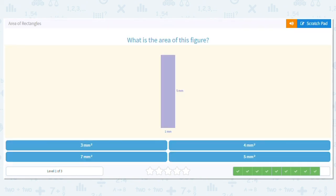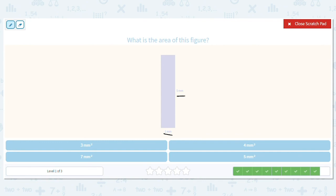All right. Last one. This time, our figure has dimensions of five millimeters and one millimeter. So what is my area? We figure it out by doing five times one. Five times one equals five. So my answer is five millimeters squared.